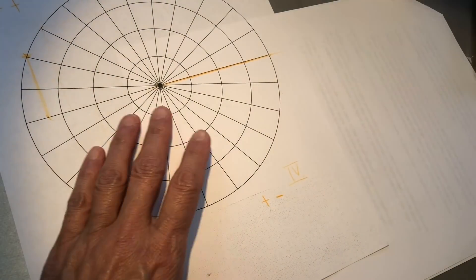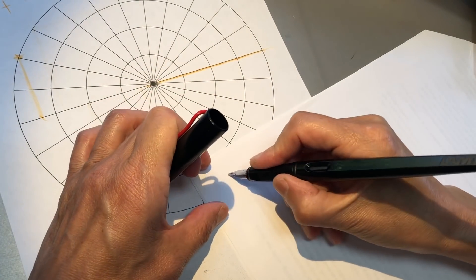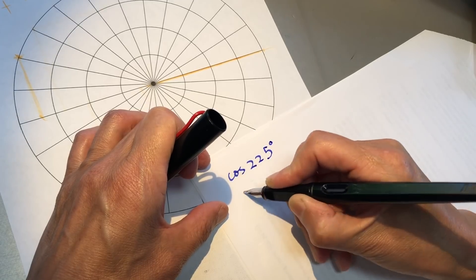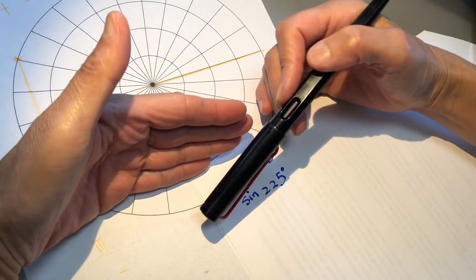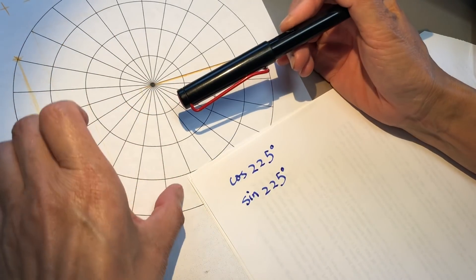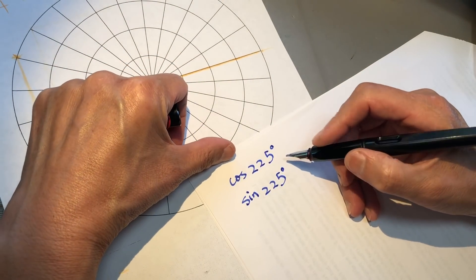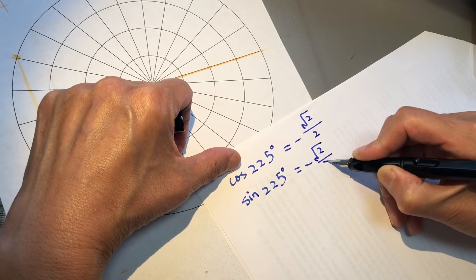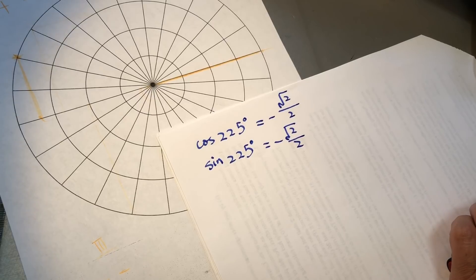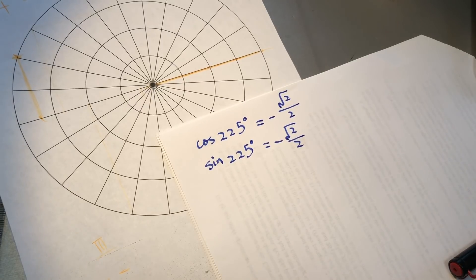Here we have another problem: cosine 225 degrees and sine 225 degrees. It is bigger than 180, so it's on the bottom, and smaller than 270, so it's in the third quadrant — both negative. We know the reference angle is 45 degrees, so just root 2 over 2, both negative. Negative root 2 over 2. Yes — that bling moment!